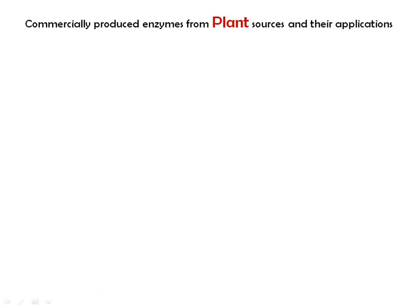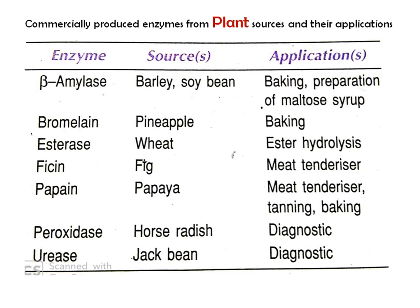Commercial production of enzymes from plant sources and their applications: Beta-amylase is obtained from barley and soybean, used in the baking industry and preparation of maltose syrup. Bromelain is obtained from pineapple, also used for baking. Esterase from wheat is used for ester hydrolysis. Ficin from fig is used for meat tenderization. Papain from papaya is used for meat tenderization, tanning, and baking. Peroxidase from horseradish is used for diagnostic purposes.